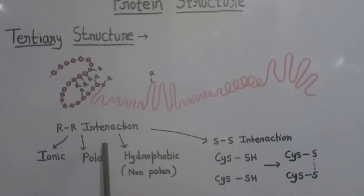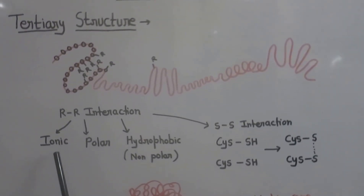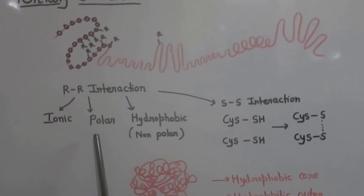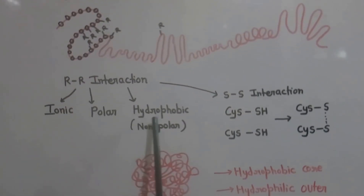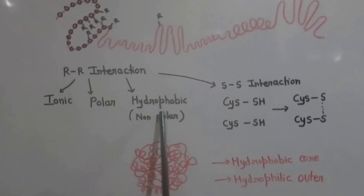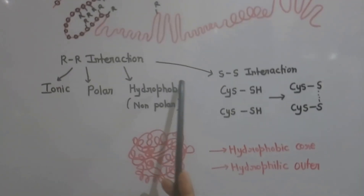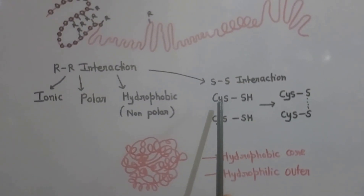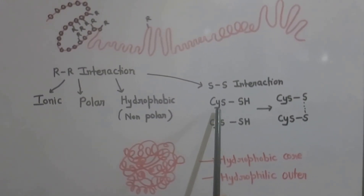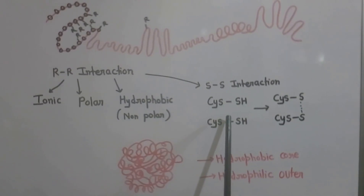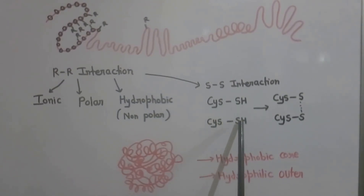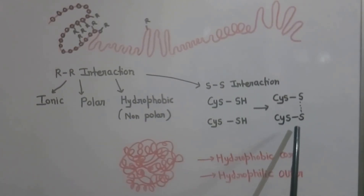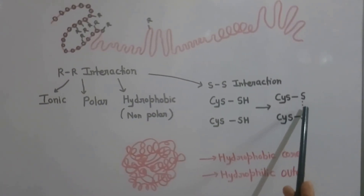These interactions may be of many types. It may be ionic when the groups are ionic. It may be of polar type when the groups are polar, such as a hydroxyl group. This interaction may be hydrophobic when the side chain is organic, or this interaction may be of disulfide type when a sulfur-containing amino acid is present. For example, if cysteine amino acids are present nearby, the sulfur groups of two cysteine amino acids can interact with each other and a disulfide bond is formed.